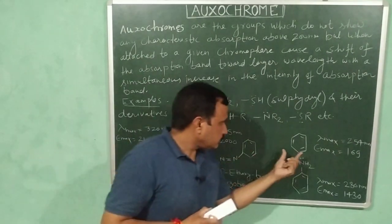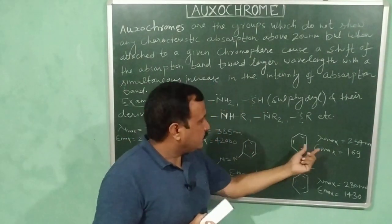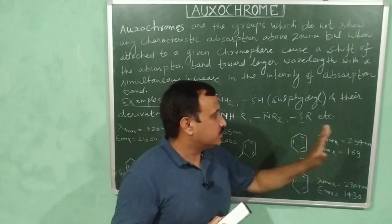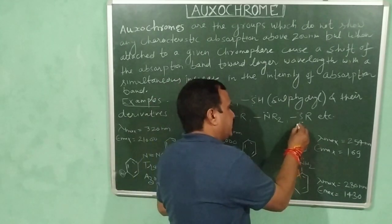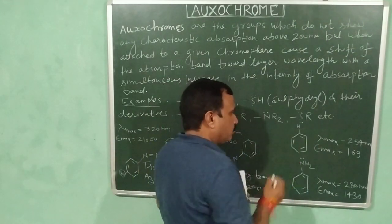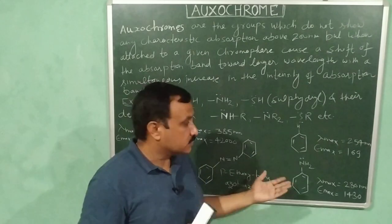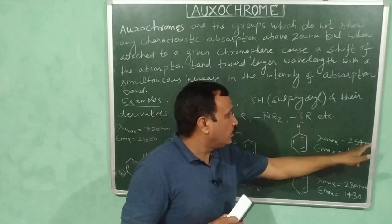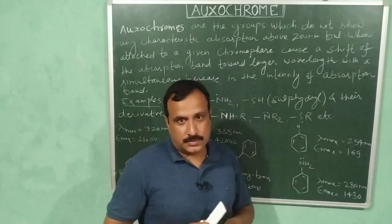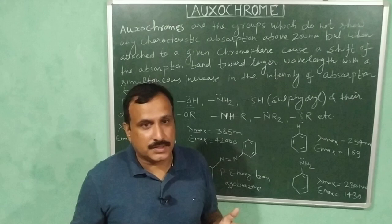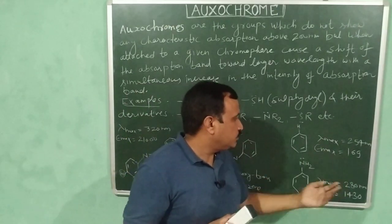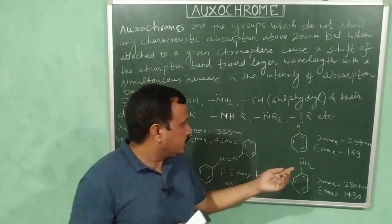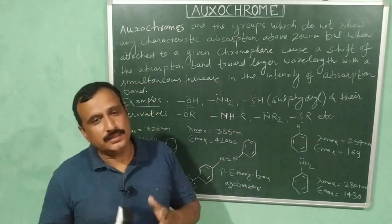In this example, benzene has a lambda maximum of 254 nm. When a hydrogen atom of benzene is replaced with an amino group, it becomes aniline. The lambda maximum increases from 254 nm to 280 nm, and the molar extinction coefficient increases from 169 to 1430. So here the amino group is acting as an oxochrome.